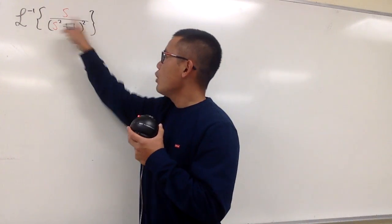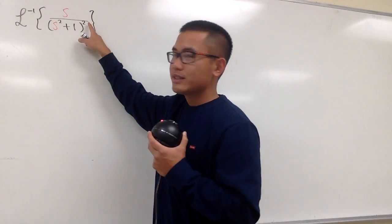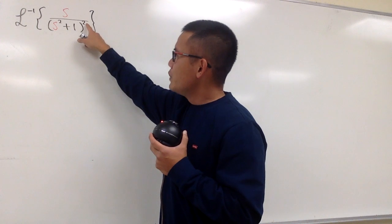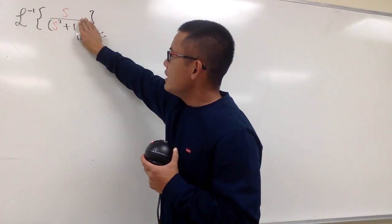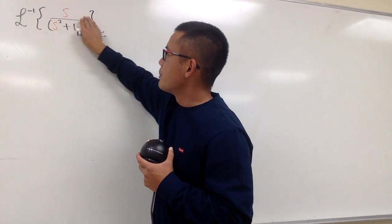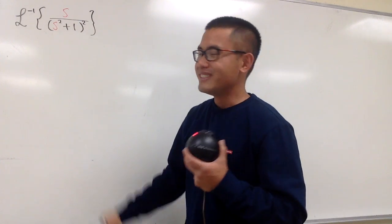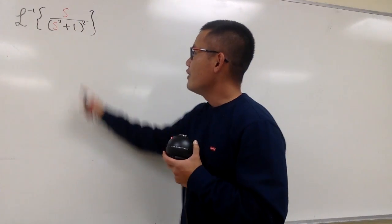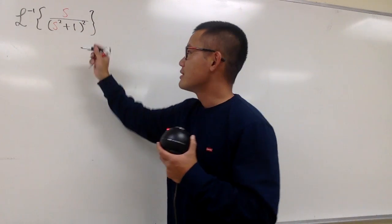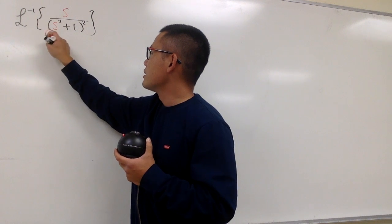We're going to do the inverse Laplace of s over (s² + 1)². You see that we have this square right here. If we didn't have the square, then s over s² + 1 would be cosine t. However, we do have this square, and you know the square means that we have this factor — it happens twice. So let me write it down.